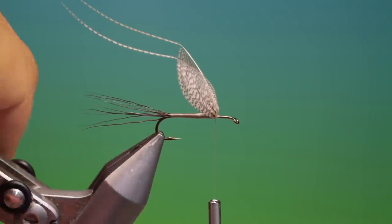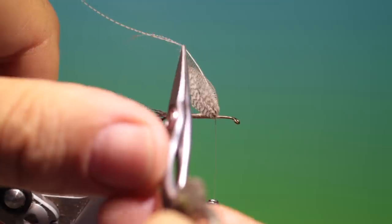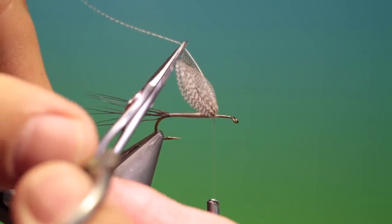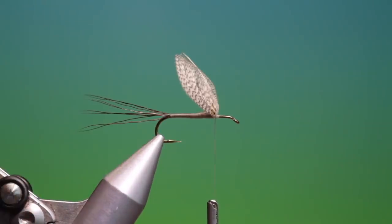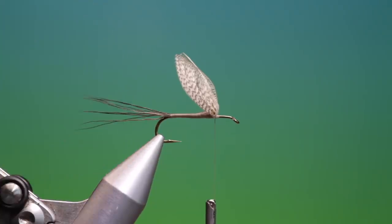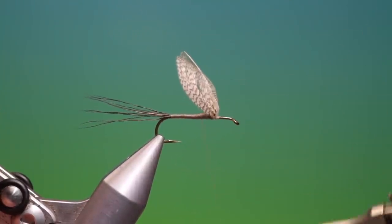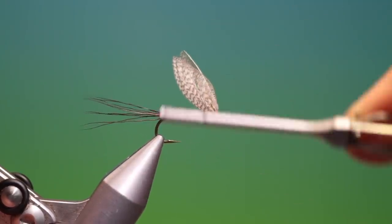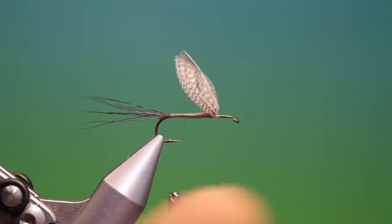Then we can trim off the end fibers. We can trim the wing. If the wing's a little bit too long we can trim those down afterwards. So then we can go back here with the tying thread and just work our way back to back there.